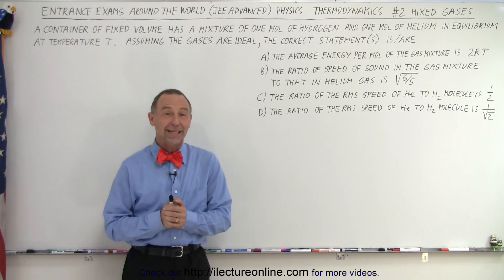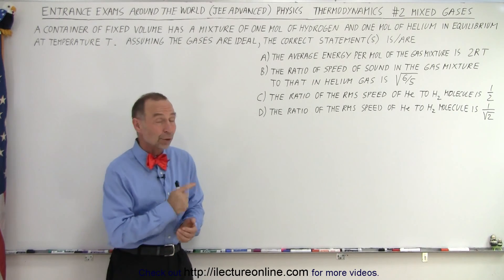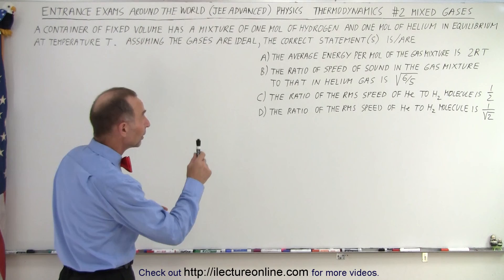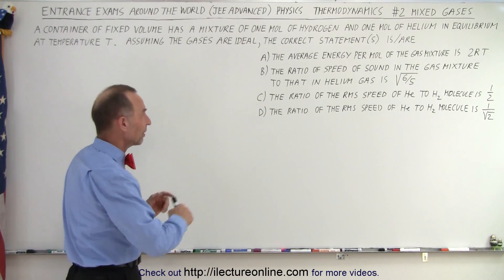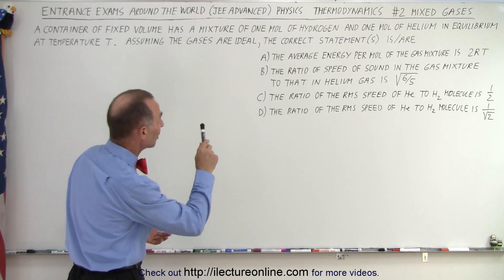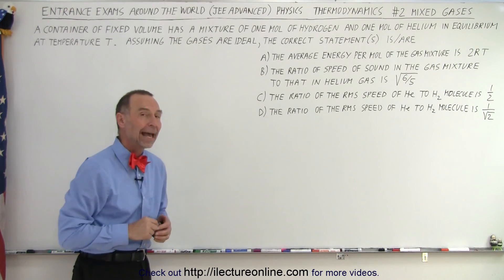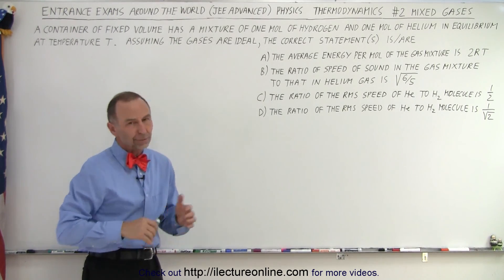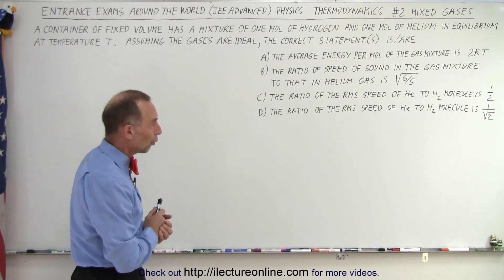Welcome to ElectronLine. Here we have another interesting example of the JEE advanced test dealing with thermodynamics. In this particular problem we're dealing with mixed gases in a particular container at a particular volume and temperature. We have a container of fixed volume with a mixture of one mole of hydrogen and one mole of helium in equilibrium at temperature T. Assuming the gases are ideal, what are the correct statements out of these four?